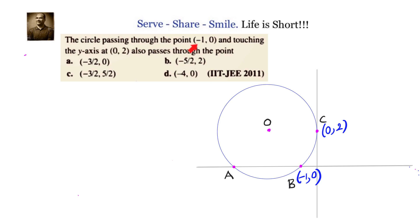The circle passing through the point (-1, 0) and touching the y-axis at (0, 2) also passes through which point? We have to find out the other point through which this circle passes. We have four options. Let's try to find the equation of the circle so that we can substitute these points and see which one satisfies it.